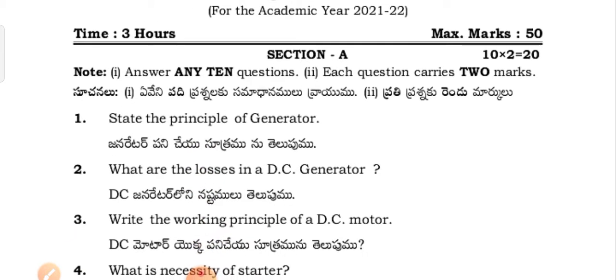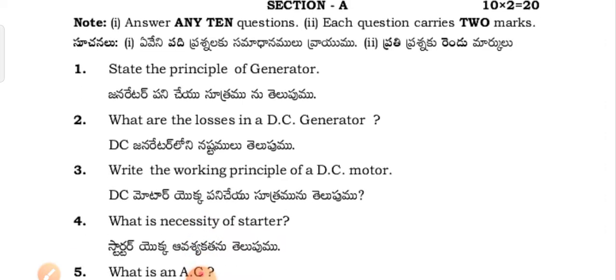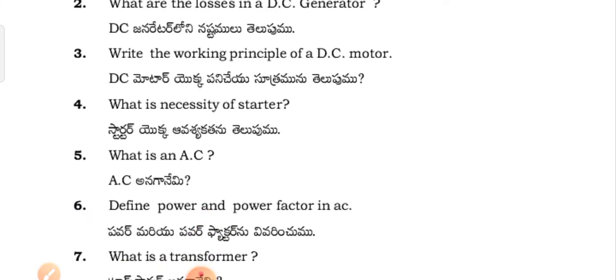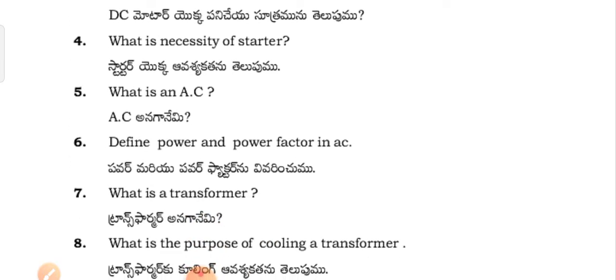Section A questions: State the principle of a generator. What are the losses in the DC generator? Write the working principle of a DC motor. What is the necessity of a starter?